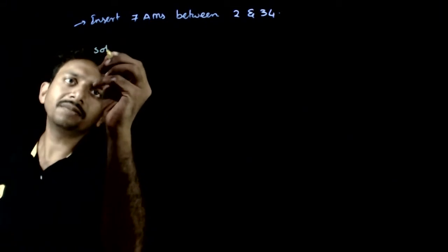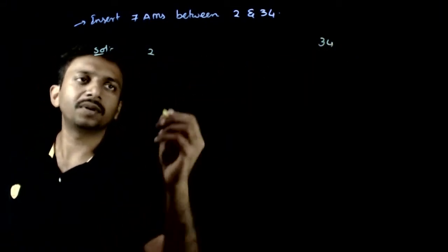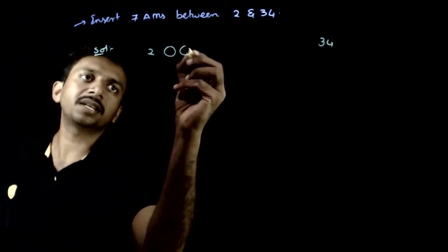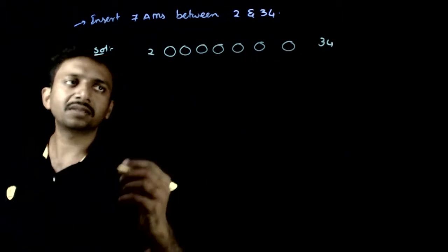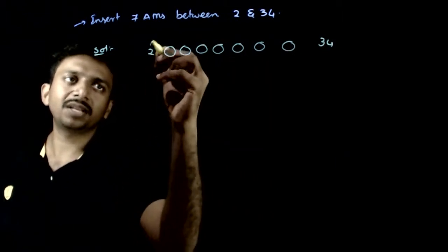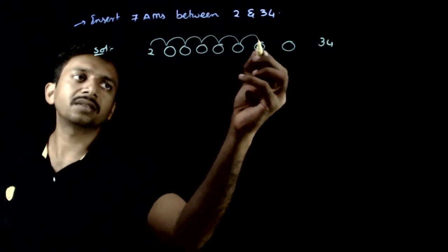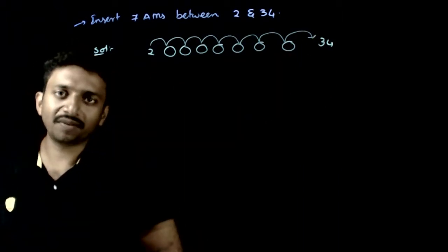So we have two numbers 2 and 34 and we have to insert 7 AMs so that the whole sequence is in AP.